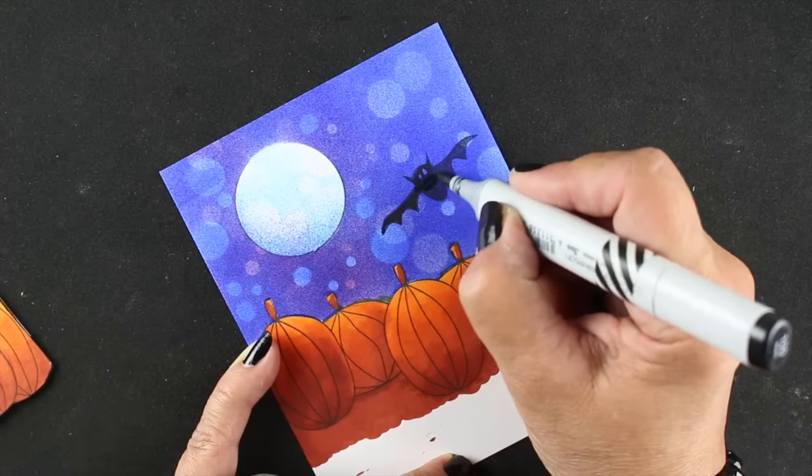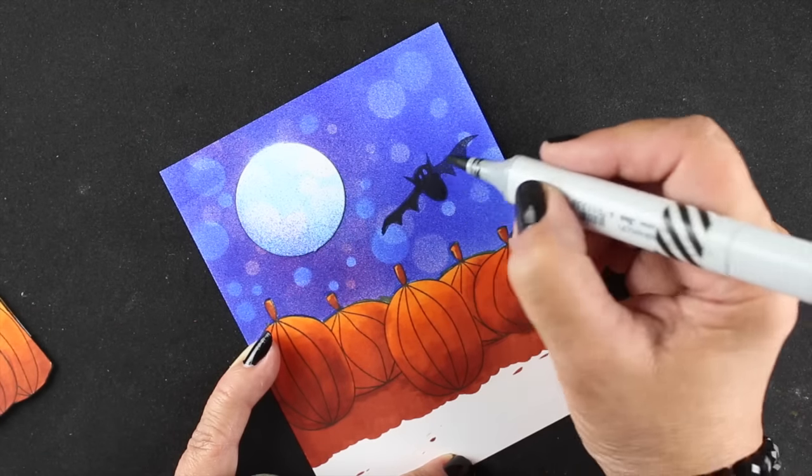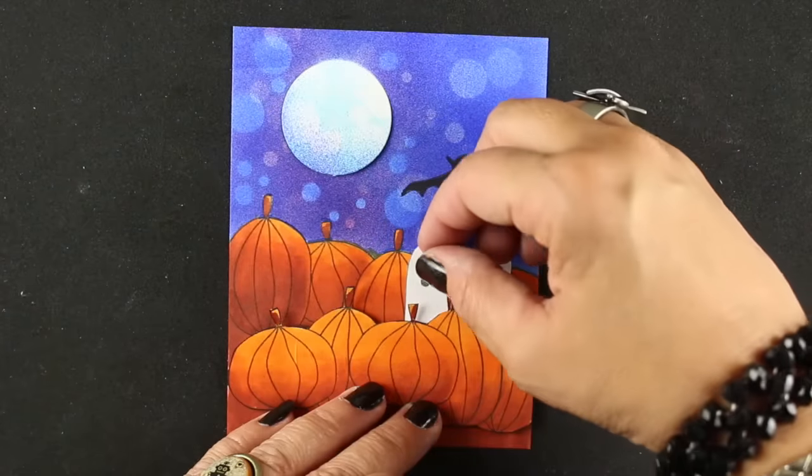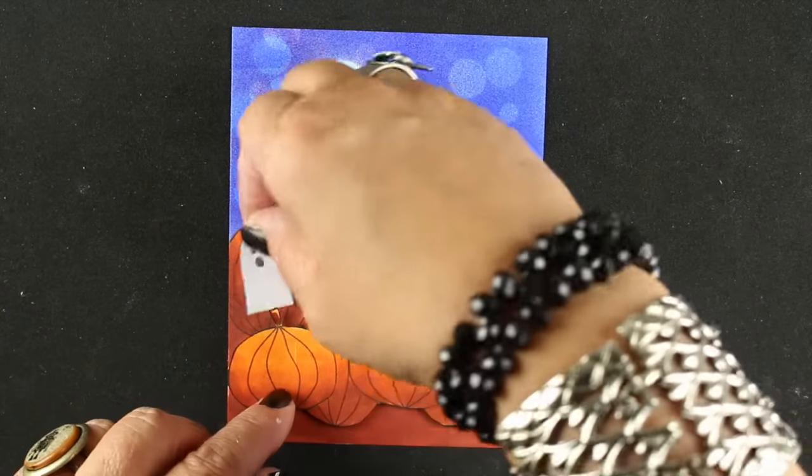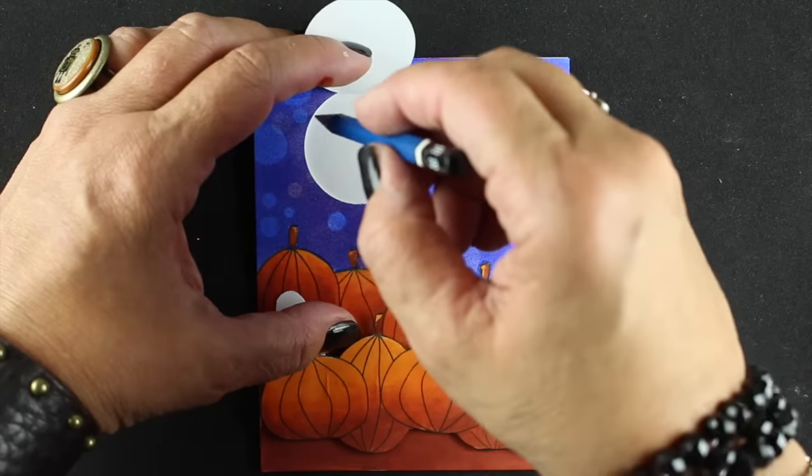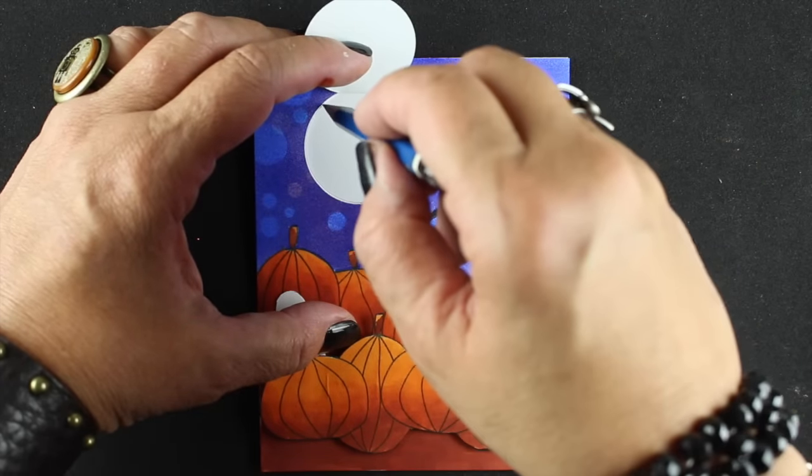I took my black marker and I just went around the very edges so that there wouldn't be a white highlight around where that was fussy cut out. I didn't stamp my bat all that well, so I just darkened him up with the marker as well. I stamped a few of the little ghosties and fussy cut them out and stuck them inside the two layers of pumpkins.